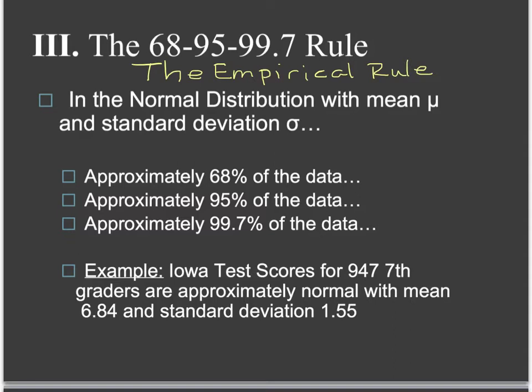In the normal distribution with a mean of mu (the Greek letter for mean) and a standard deviation of sigma (the Greek letter for standard deviation), we know certain things about where the data lies. 68% of the data — well over half — is within one standard deviation of the mean. That means if you take the mean, add one standard deviation, and also subtract one standard deviation, approximately 68% of the data will fall in that range.